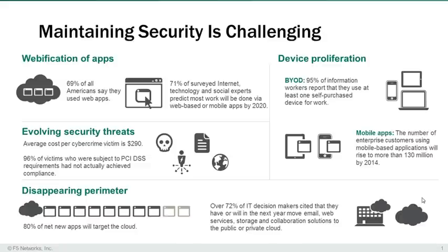Any of these IT computing trends — the webification of apps, device proliferation, evolving security threats, or the disappearing perimeter — are all potentially risks to the business. For instance, the webification of apps puts demands on an organization's ability to scale beyond what traditional networks can handle. With the evolving security threats, additional security infrastructure might be necessary to deal with sophisticated attacks, plus particular organizations are being specifically targeted.